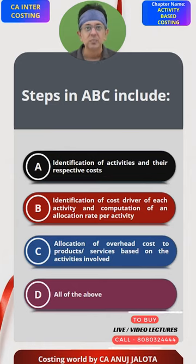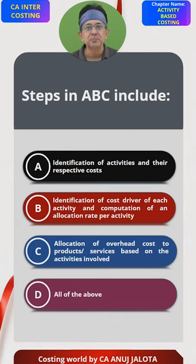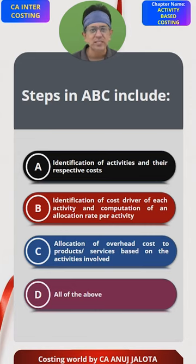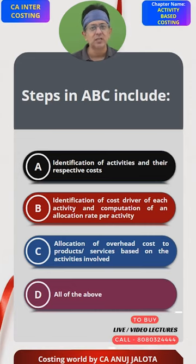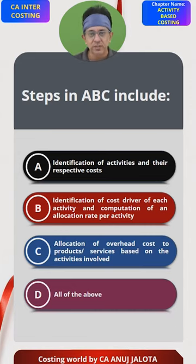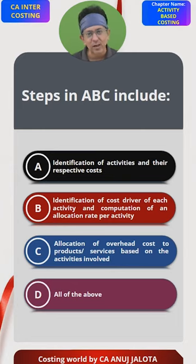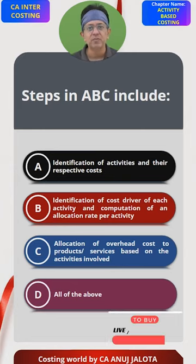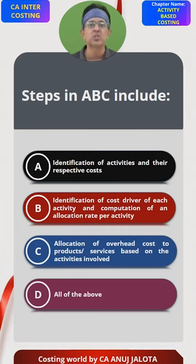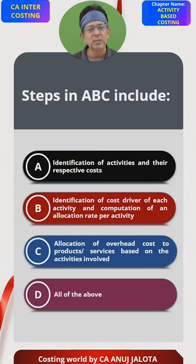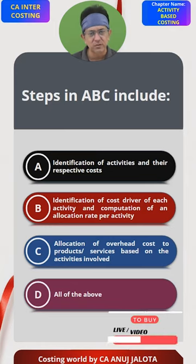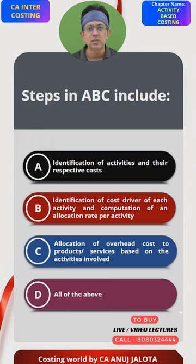Now think of any ABC question you have done. The first step is to identify all the activities. Second, we find out the cost of each activity. Third, we find out the cost driver of each activity. Fourth, we find out the cost driver rate, which is nothing but the allocation rate of that activity. Fifth, we divide that cost among the various products or services, also called cost objects. So the answer covers A, B and C — these are the three steps, in this order only. So the answer should be D, all of the above.